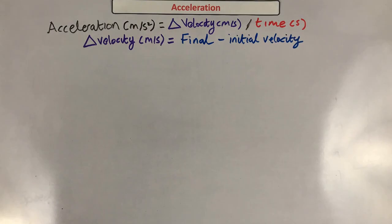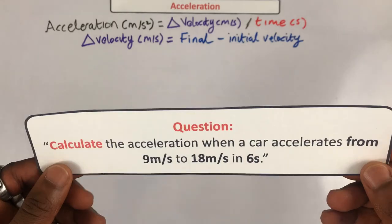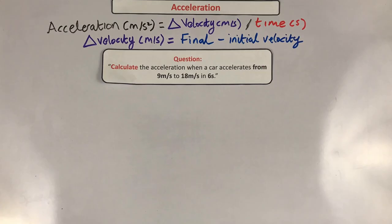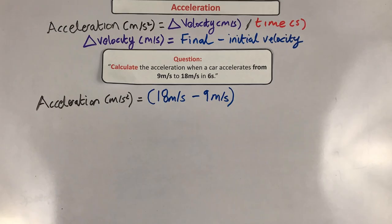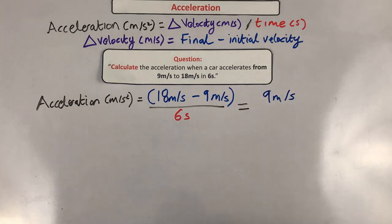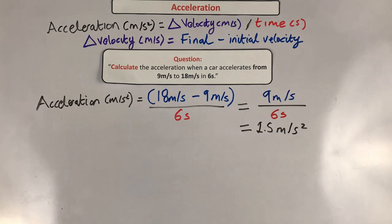To find your change in velocity, you subtract initial velocity from final velocity. For example: a car accelerates from 9 meters per second to 18 meters per second in 6 seconds. Final velocity minus initial velocity gives 18 minus 9, which equals 9 meters per second, divided by 6 seconds, giving 1.5 meters per second squared.